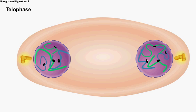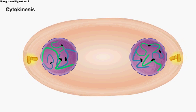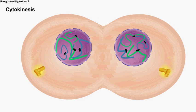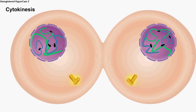Finally, the cytoplasm of the cell divides in a process called cytokinesis, forming two daughter cells. Mitosis is now complete.